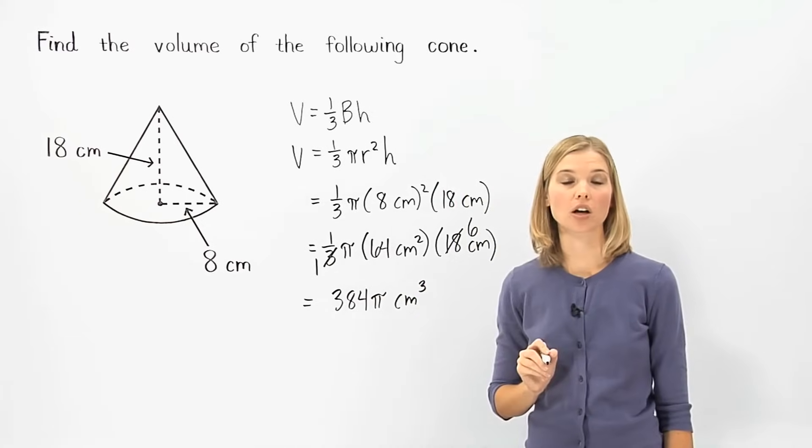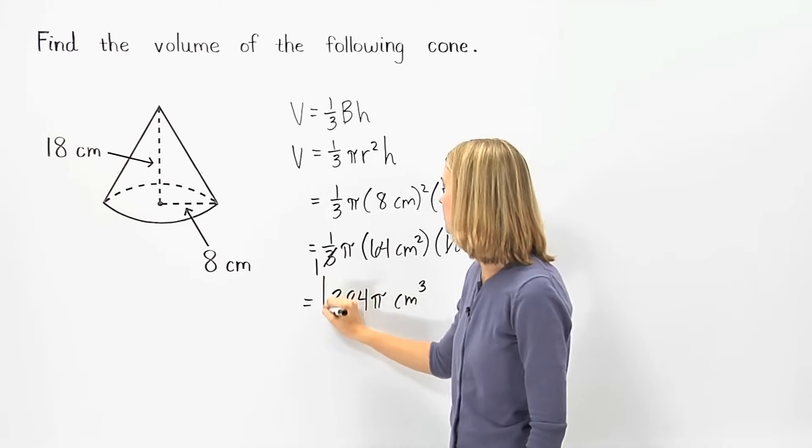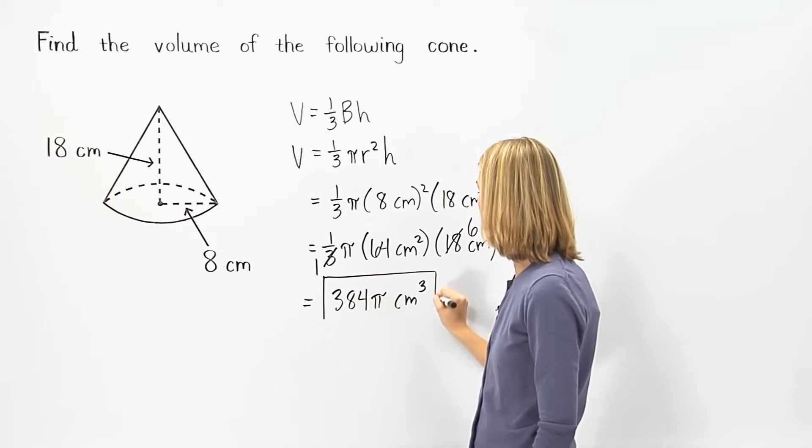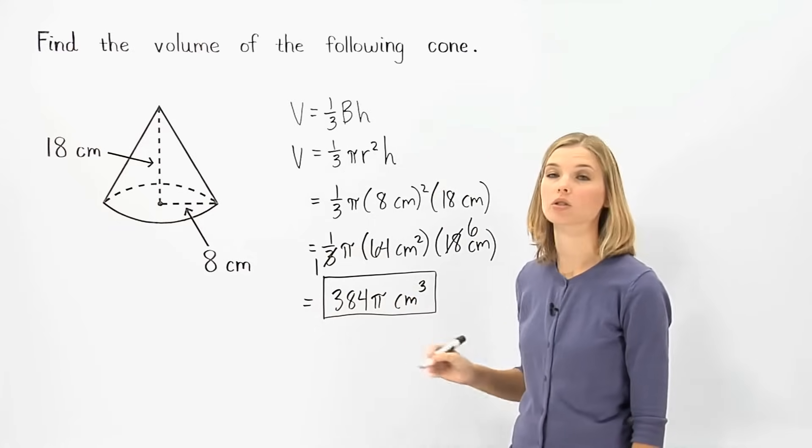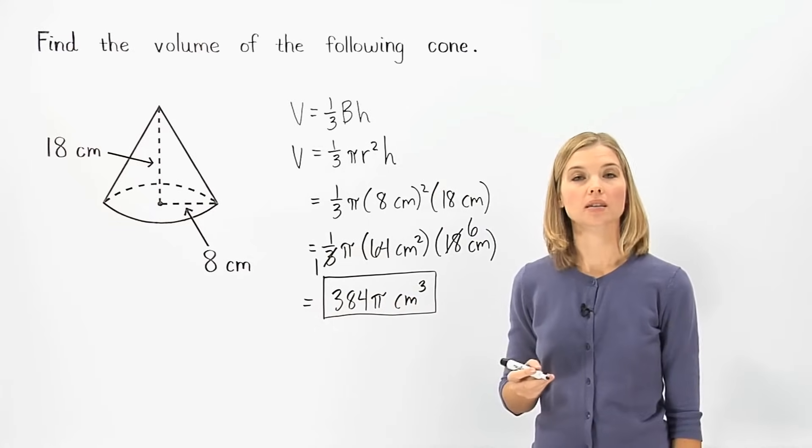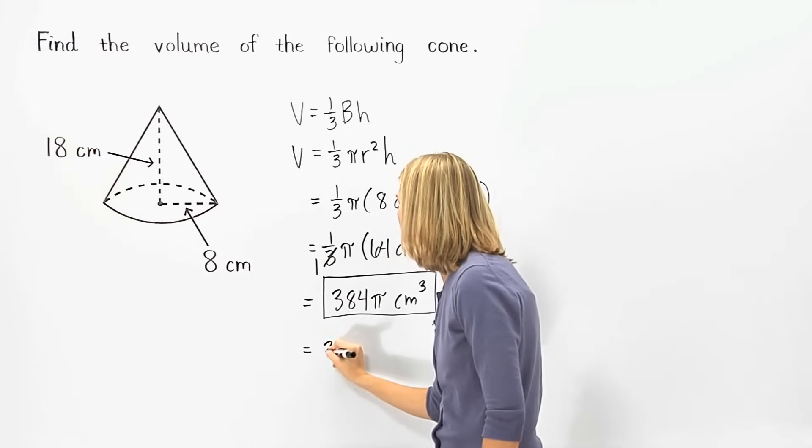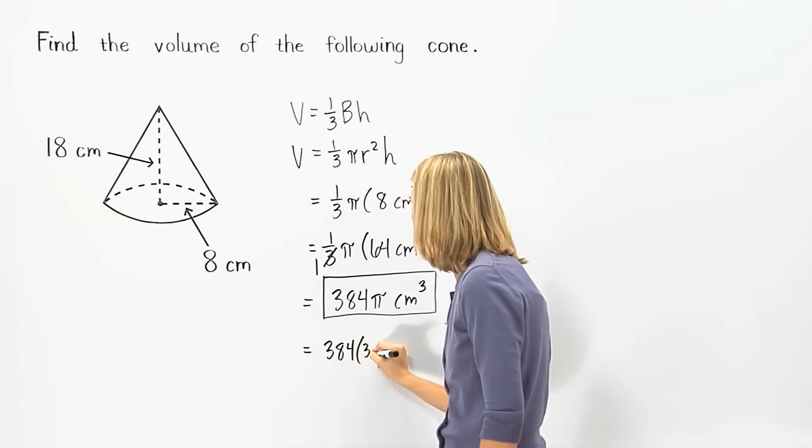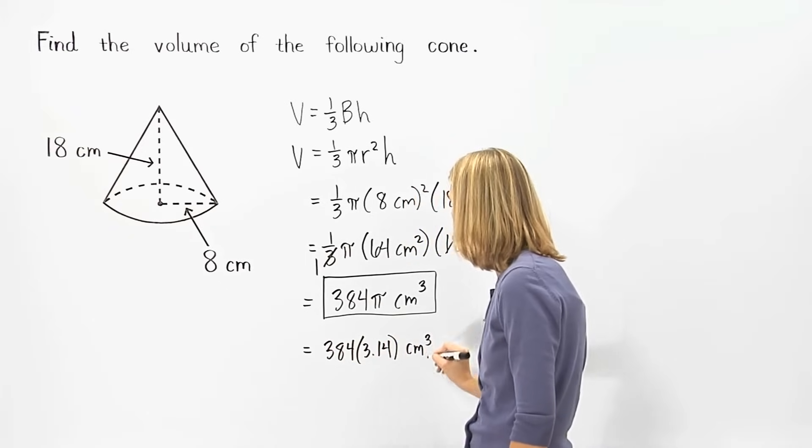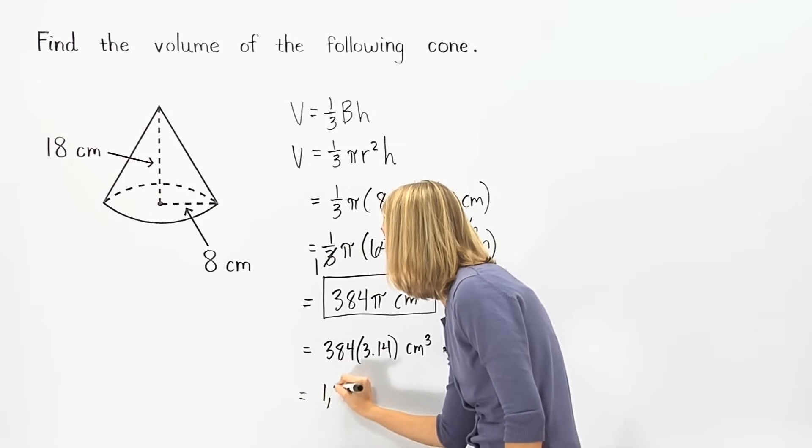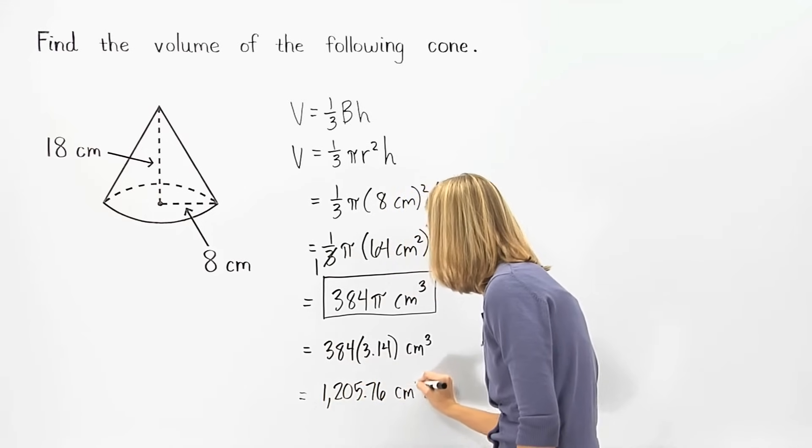So one way to write the volume of the given cone is 384 pi cubic centimeters. Next, remember that pi is approximately equal to 3.14. So we can plug 3.14 in for pi, and we have 384 times 3.14 centimeters cubed, which equals 1205.76 centimeters cubed.